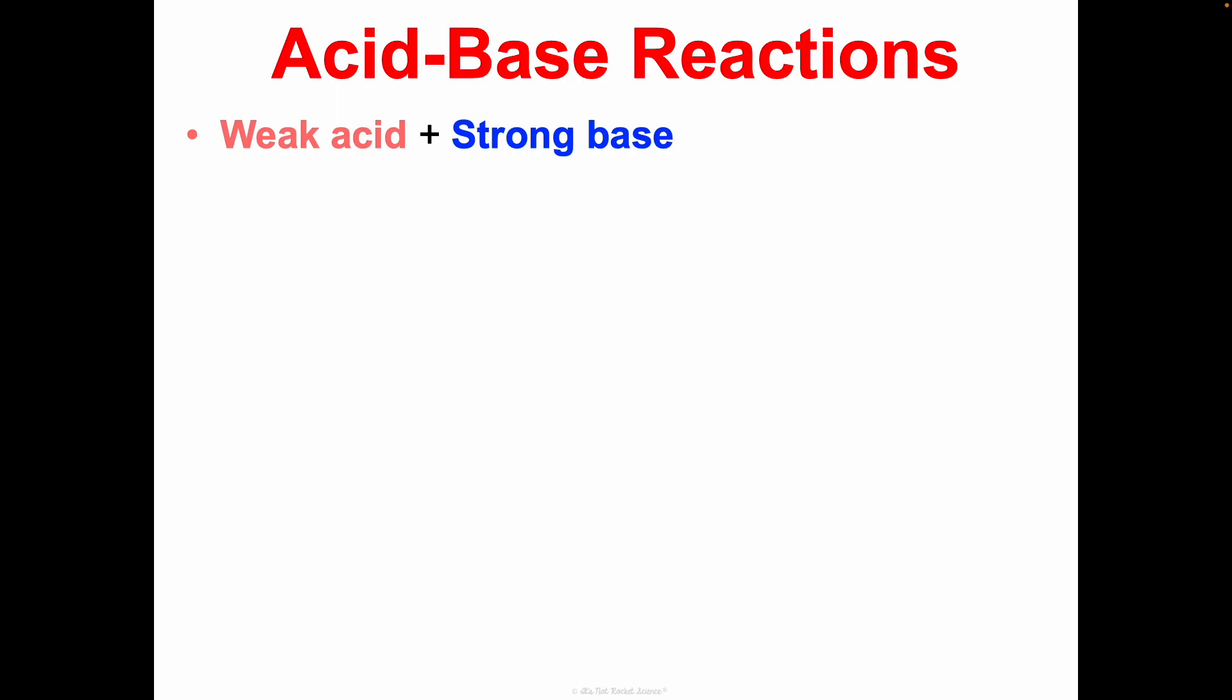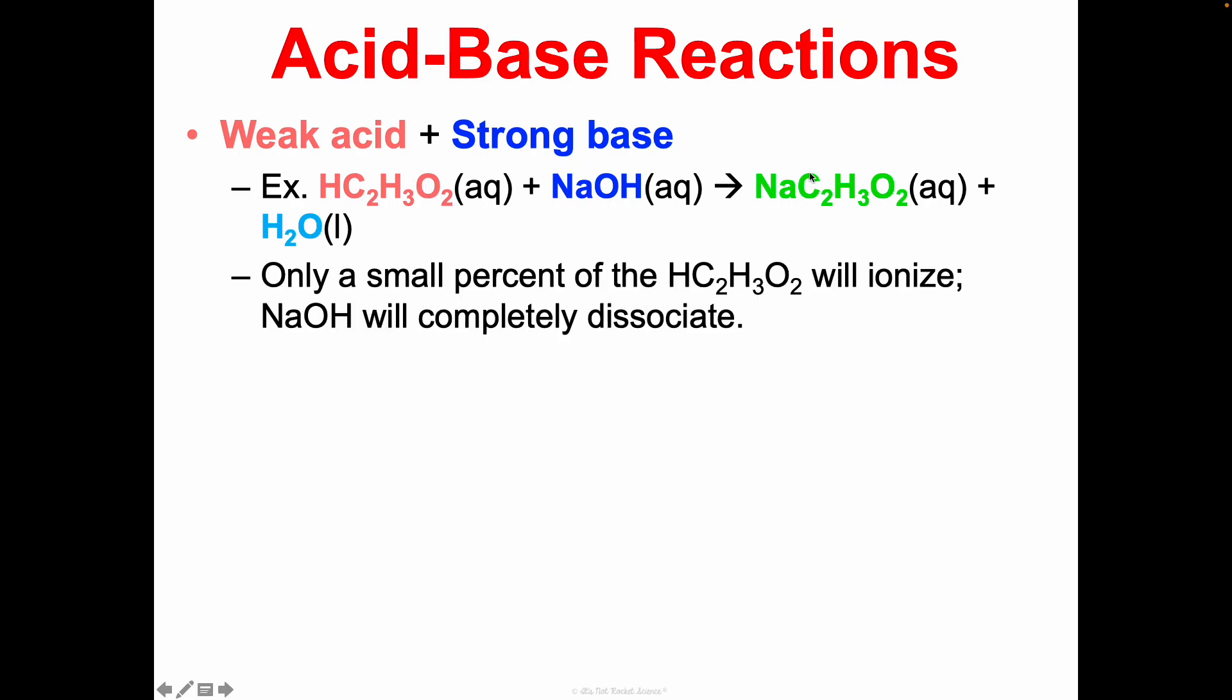We see something similar with a weak acid and a strong base reaction. So a weak acid like acetic acid reacts with a strong base like sodium hydroxide. We get sodium acetate and water. Only a small percent of the acetic acid will actually ionize because it's not crazy polar. And the NaOH will completely dissociate because it's a strong base. We'll see this reaction go to completion, but we'll definitely have some of this acetic acid remaining in the solution.